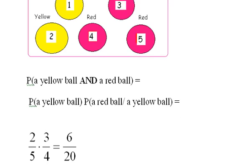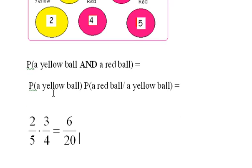So let's see what that comes out to be. Well, it's easy. The yellow ball is going to be two-fifths in the first draw. But then we only have four balls left and three of them are red. So the probability of a red ball is three over four, which is six over twenty.